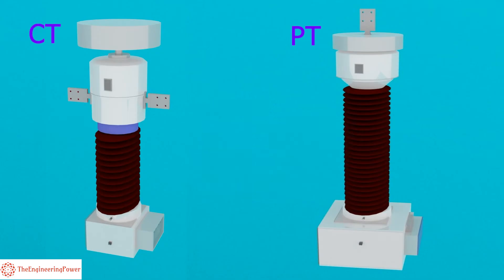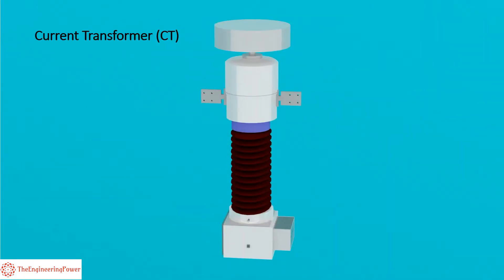The structures of a CT and PT in a substation are quite similar. Here is how to differentiate between a CT and a PT. As a CT is always connected in series with the power line, therefore it has two primary terminals that are clearly visible on both sides.